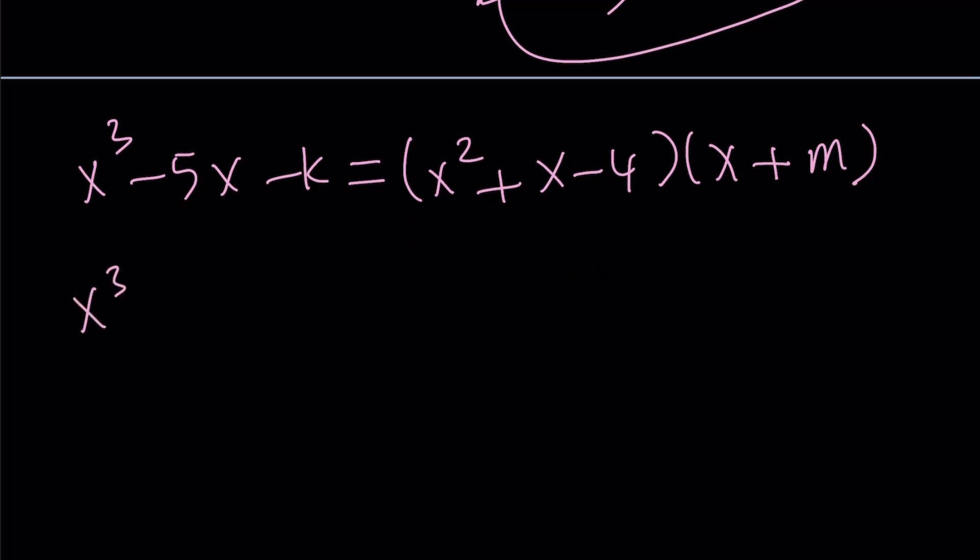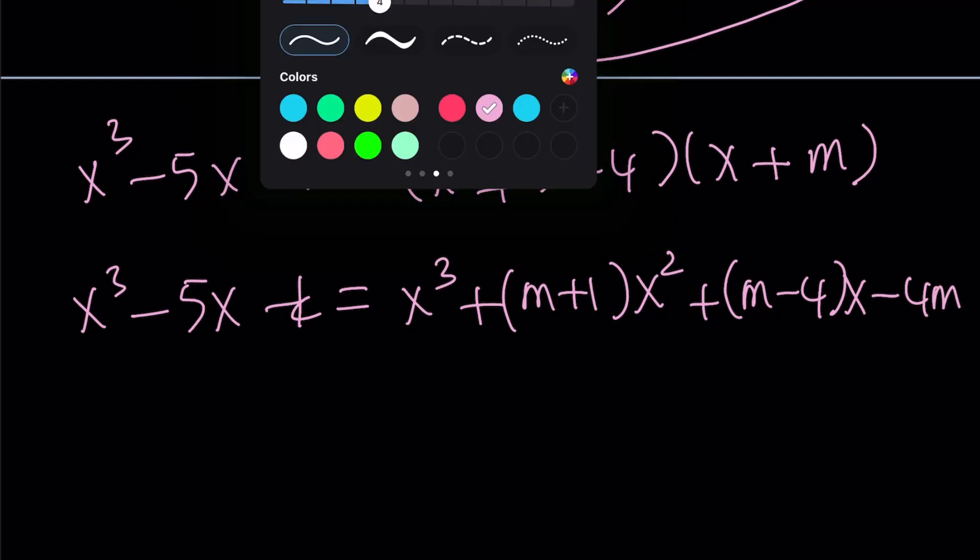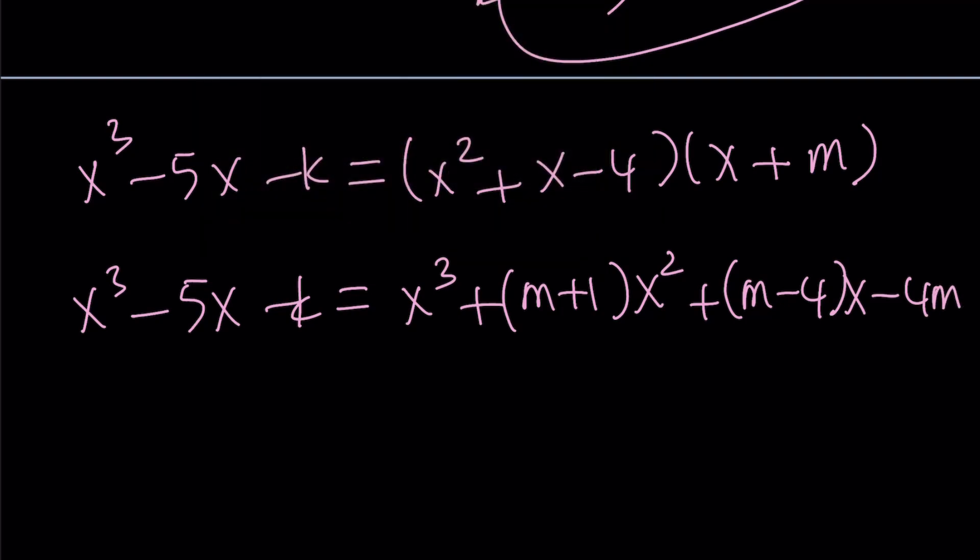Now, we're going to go ahead and simplify the right-hand side as x cubed minus m plus 1x squared plus m minus 4x minus 4m. Now, set them equal to each other. These are polynomials. The coefficient of x squared must be 0. The coefficient of x must be negative 5. The constant term must equal k.